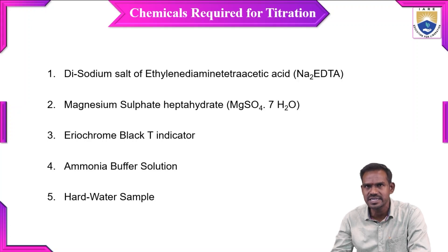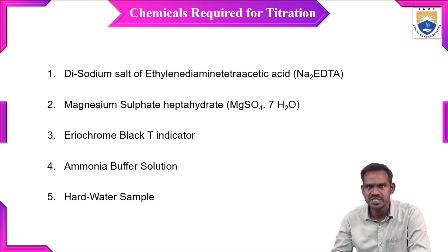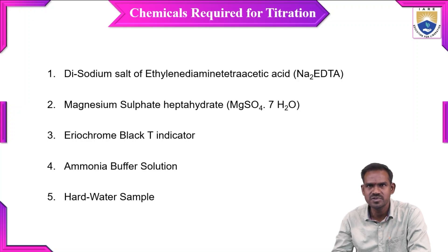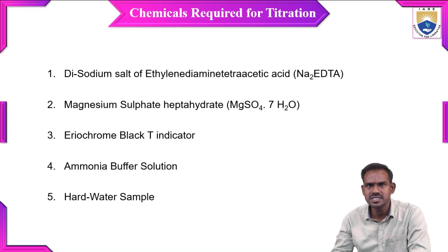Distilled water is free from calcium and magnesium ions, and when we dissolve Epsom salt in it, it provides Mg2+ ions — this is called the standard hard water sample, meaning we have a fixed concentration of hardness-causing cations. Third is EBT, which acts as an indicator showing a color change at the end point. Fourth is buffer solution — basic buffer solution. In this titration we use ammonia buffer solution, whose components are NH3 and NH4+.